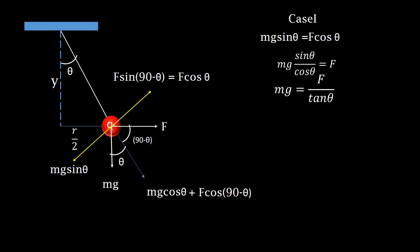Therefore, mg times sin theta upon cos theta equals F, or mg equals F upon tan theta. Tan theta is always opposite upon adjacent.